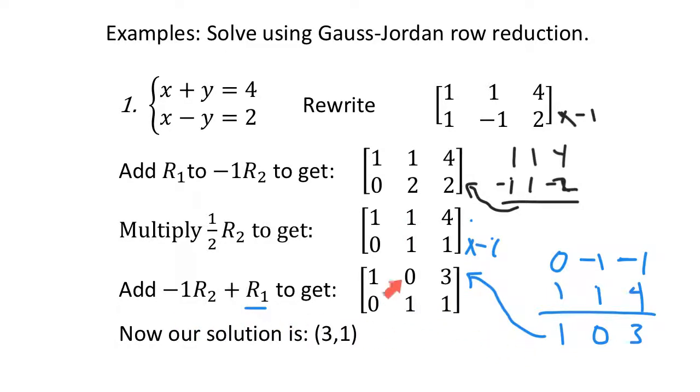I end up with 1, 0, 3. Now our solution says 1x + 0y = 3, so x = 3. 0x plus 1y = 1, so y = 1. And we have our solution, (3, 1). Let's take a look at another example. This one's a little bit bigger. Same idea.